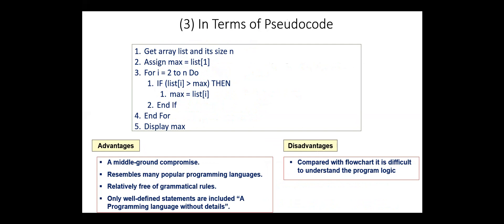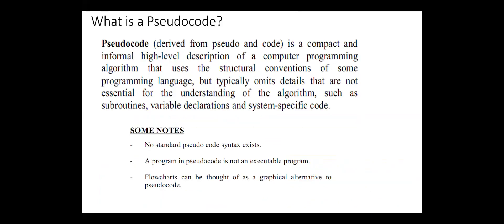The third used method to represent algorithms is in terms of pseudocode. Pseudocode is a compact and informal high-level description of a computer programming algorithm that uses the structural conventions of some programming language, but typically omits details that are not essential for understanding of the algorithm, such as subroutines, variable declarations, and system-specific code. There is no standard pseudocode syntax. A program in pseudocode is not an executable program.